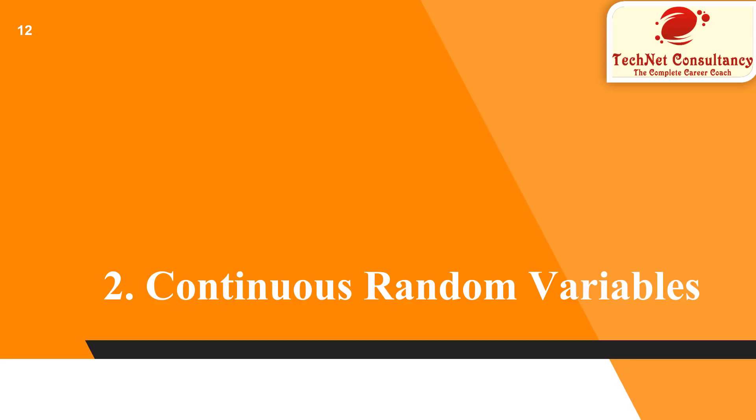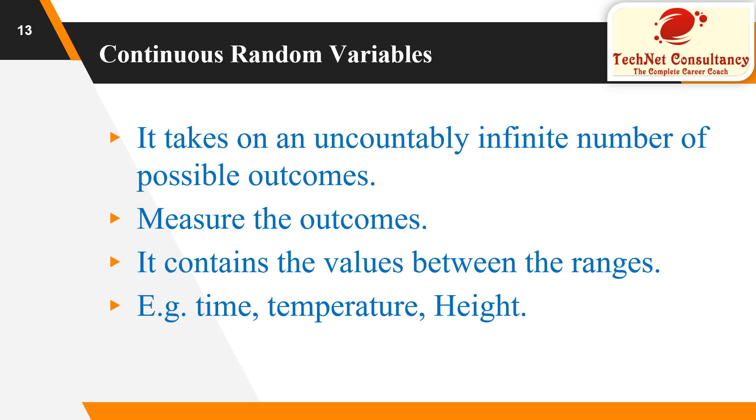Now, let's jump on the second category, continuous random variable numbers. It takes on an uncountably infinite number of possible outcomes. We measure the outcomes, and it contains the values between the ranges.